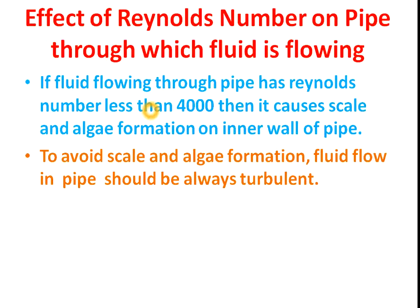Now let's see the effect of Reynolds number on pipe flow. If the Reynolds number is less than 4000, the fluid flows in laminar flow, which causes scale formation, algae growth, and bacterial formation on the inner wall of the pipe. To avoid this, the fluid should always be kept in turbulent flow, which prevents scale and algae formation. This is why pharmaceutical industries prefer turbulent flow — process water in pharmaceutical plants always flows at velocities greater than 3 m/s to maintain turbulent flow.